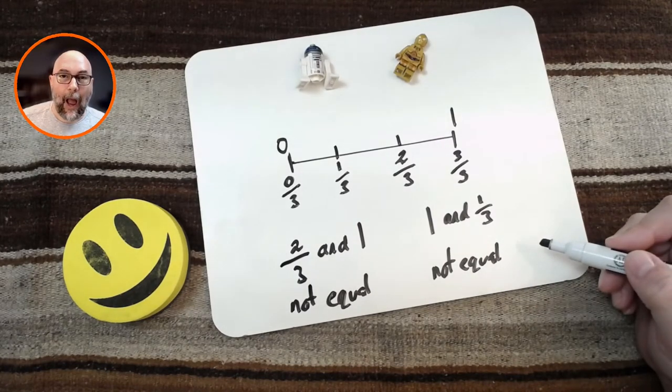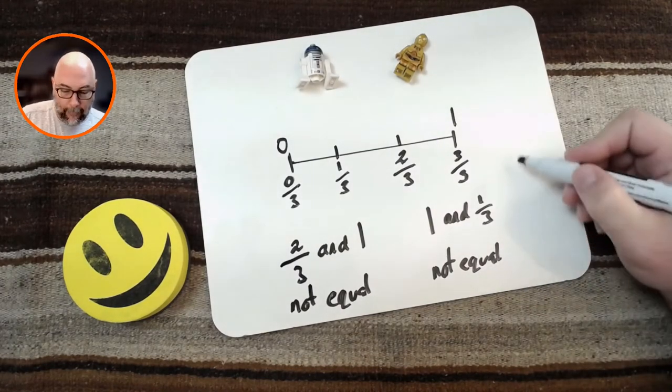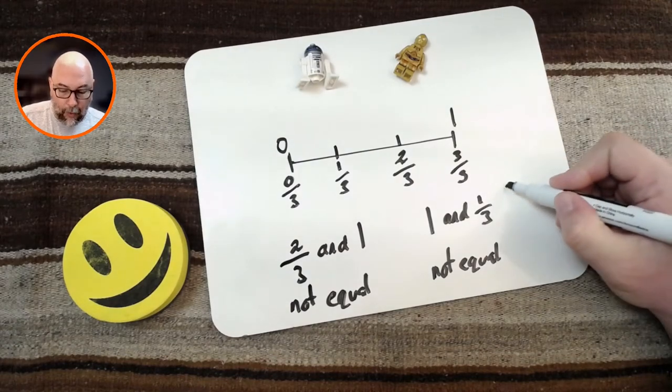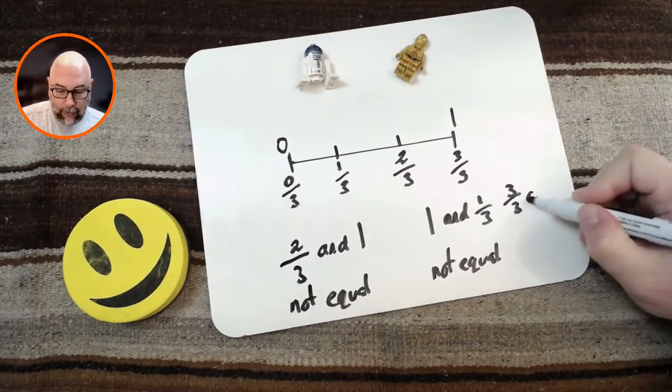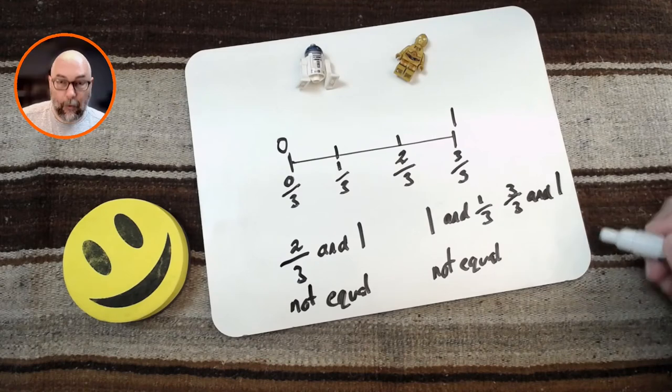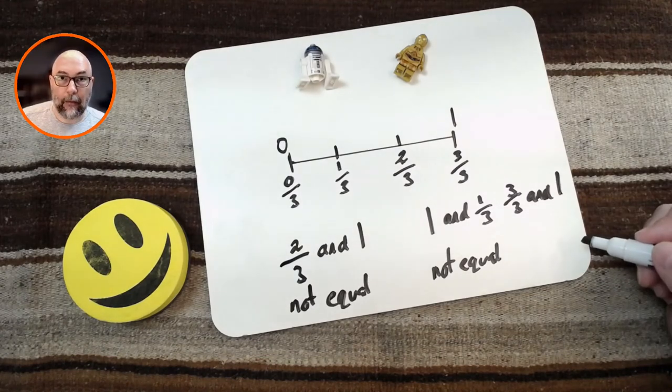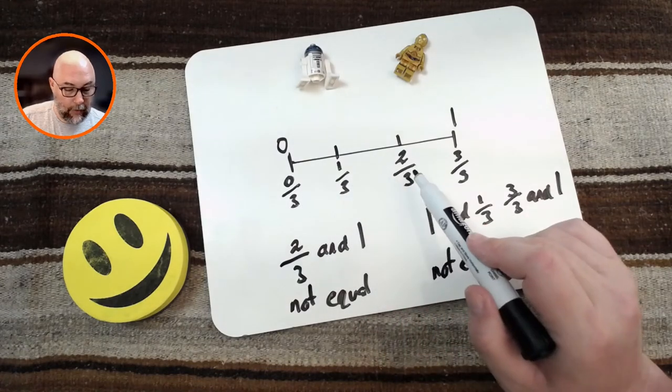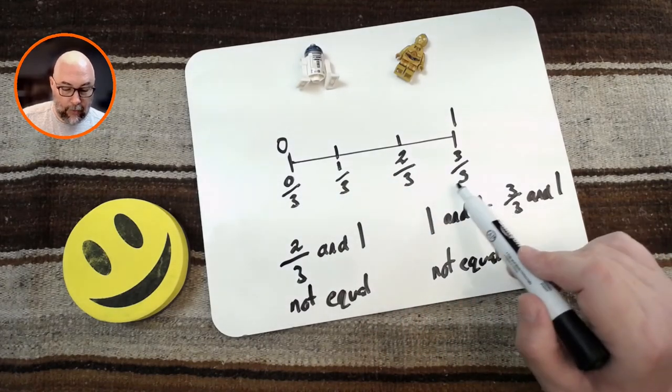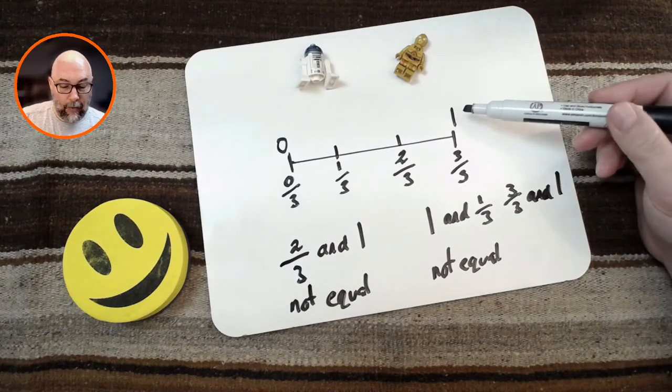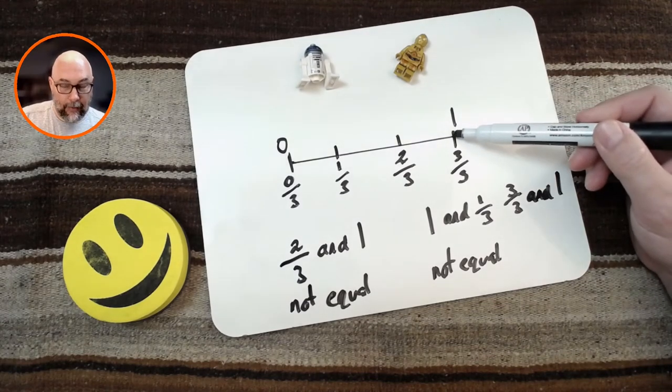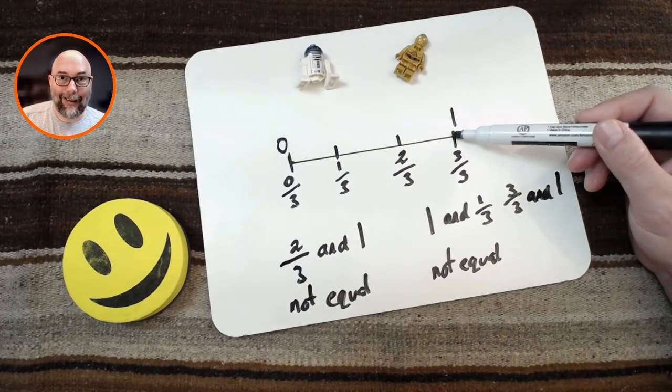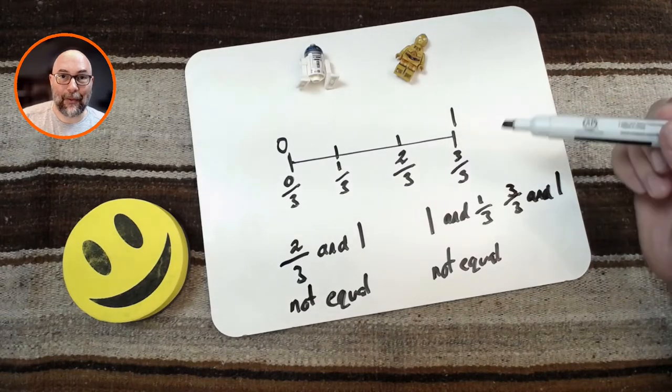Now, how about the number 3 thirds and 1? Are these numbers equal? Let's look for 3 thirds: 0, 1, 2 thirds, 3 thirds. This is 3 thirds, and this is number 1. They are in the same place. That means these numbers are equal.